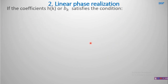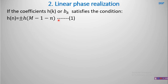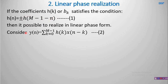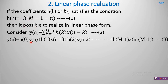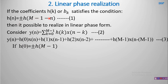Next, let us take the linear phase realization. If the coefficients follow the rule h(n) = ±h(m-1-n), then it is possible to realize the filter in a linear phase form — a special form — by combining coefficients of equal value and rearranging the output equation. Consider the output equation sigma k=0 to m-1 of h(k)·x(n-k). Substituting n=0: h(0) = ±h(m-1), so the last term becomes x(n-(m-1)) with constant h(m-1).